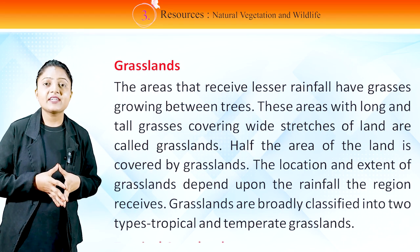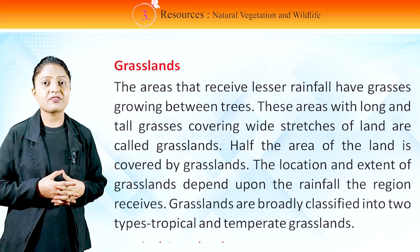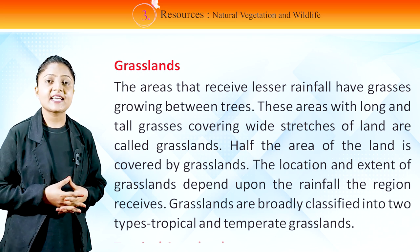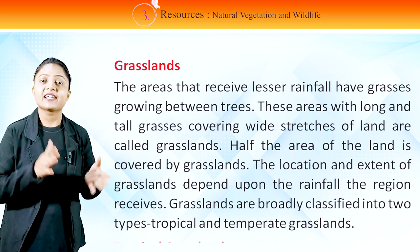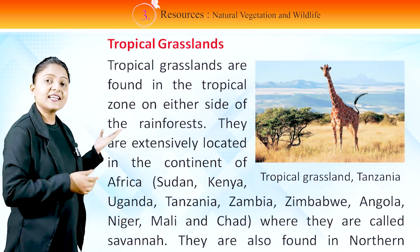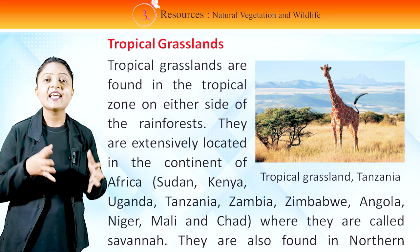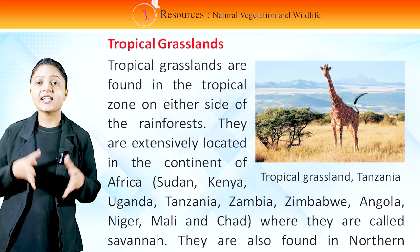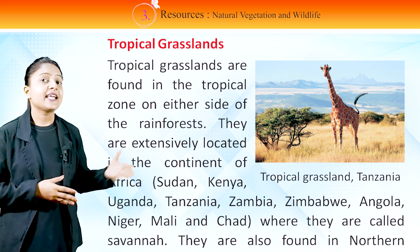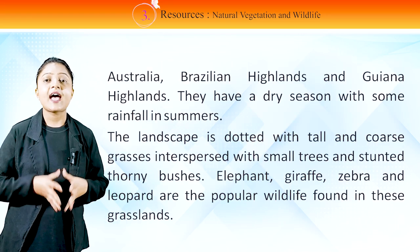Grasslands: Areas that receive lesser rainfall have grasses growing between trees. These areas with long and tall grasses covering wide stretches of land are called grasslands. Half the area of the land is covered by grasslands. The location and extent of grasslands depend upon the rainfall the region receives. Grasslands are broadly classified into two types: tropical and temperate. Tropical grasslands are found in the tropical zone on either side of the rainforest. They are extensively located in Africa — Sudan, Kenya, Uganda, Tanzania, Zambia, Zimbabwe, Angola, Niger, Mali and Chad — where they are called Savanna. In this picture, you can see tropical grasslands in Tanzania.